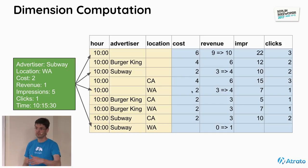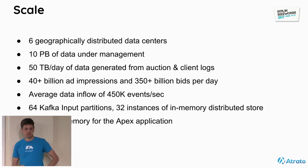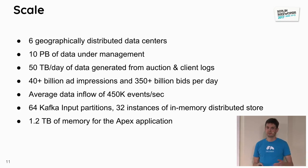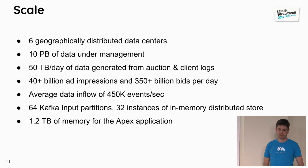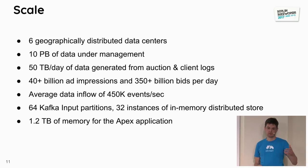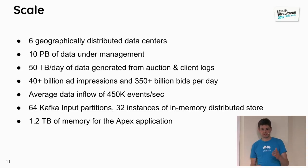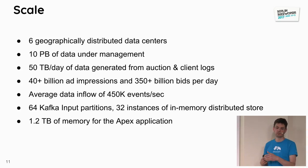At scale: six geographically distributed data centers, 10 petabytes of data total, 50 terabytes moving in a day, approximately 40 billion ad impressions and 350 billion bits per day. Average data flow translates to 450K events per second. This is handled with 64 parallel partitions doing Kafka read, decompress, filter, enrich, and pre-aggregate, plus 32 store instances keeping data in memory.